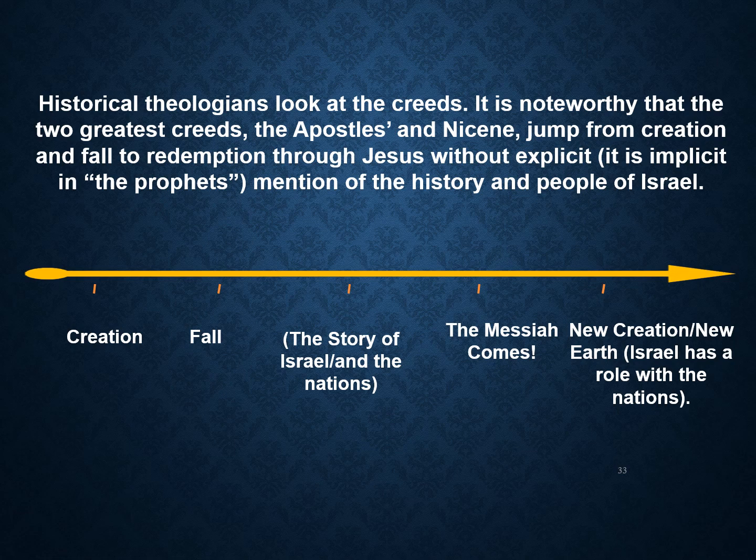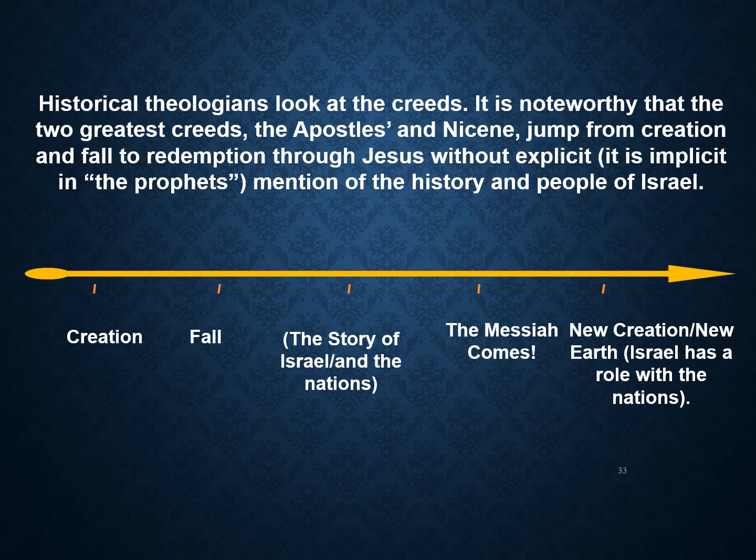When we do historical theology and look at the creeds — both the Apostles' Creed and the Nicene Creed — they tend to jump from creation and fall straight to Jesus without any mention of Jesus' relationship with Israel or the history and people of Israel. A better narrative layout would be: creation and fall, then the story of Israel and the nations, then the Messiah, and then in the new heavens and new earth a continued relationship between Israel and the nations. Some may disagree, but that's the way it should be taught.